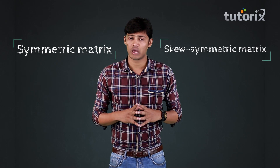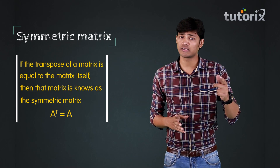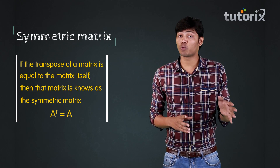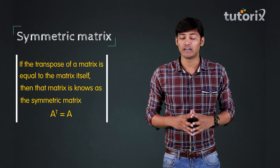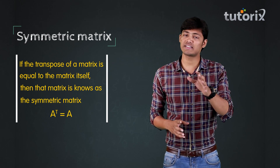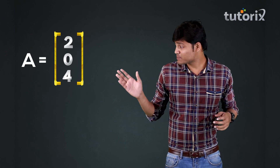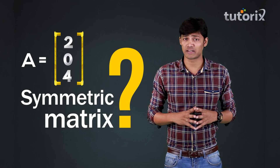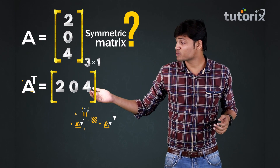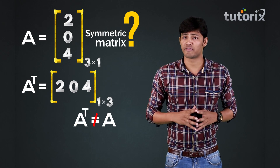Based on the transpose of a matrix, two types of matrices are defined: symmetric matrices and skew-symmetric matrices. If the transpose of a matrix is equal to the matrix itself, then that matrix is known as the symmetric matrix. Now, this matrix is not a symmetric matrix since its transpose is not equal to itself.